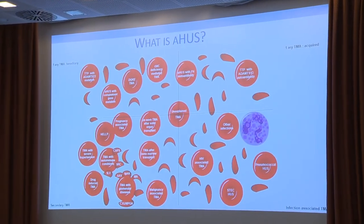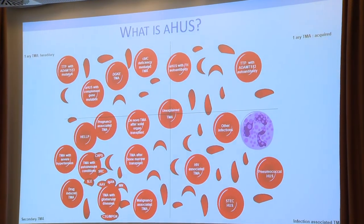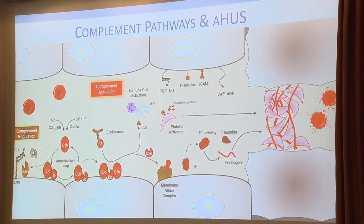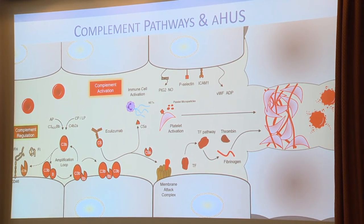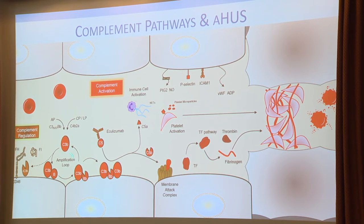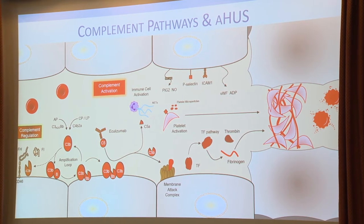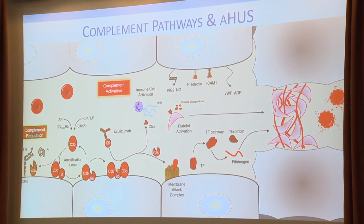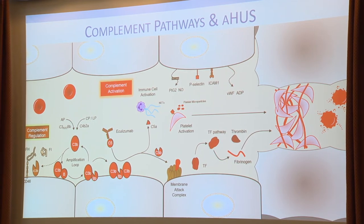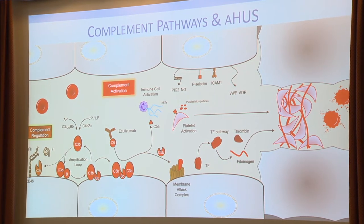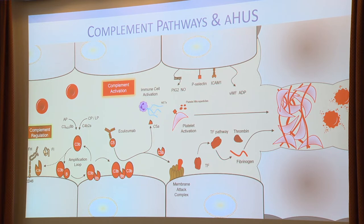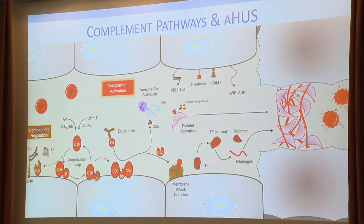This is a classification of TMAs. To some people atypical HUS means anything that is not TTP and Shiga-toxin HUS, and to some people it just means complement-mediated TMA. Complement pathways in HUS are pretty well understood. We know the alternative pathway — Factor H, CD46, Factor B, C3B — are predominantly involved in the pathogenesis of atypical HUS. Predominantly fluid-phase activity is seen in atypical HUS.